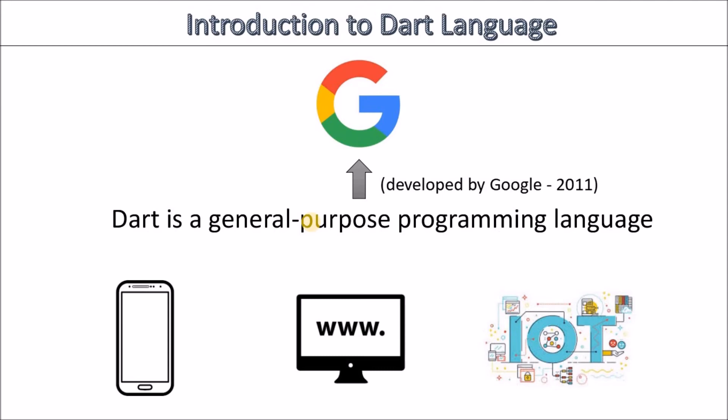We can also use Dart to write IoT applications. If you don't know, IoT stands for Internet of Things — it's basically the area we're living in now, where your watch has access to the internet, your car, your fridge, and all that stuff. So you see the power of Dart and the power you're going to gain from this course.